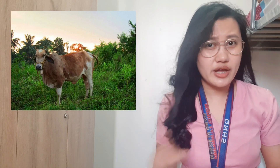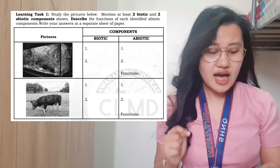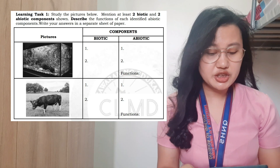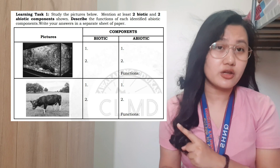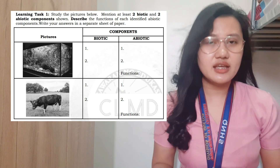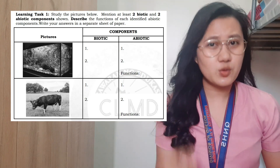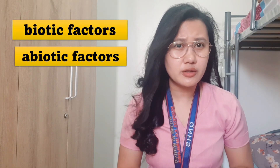Yan ang gagawin nyo sa inyong learning task number one. You have to study these pictures and then mention at least two biotic and two abiotic components shown. And then you're going to describe the functions of each identified abiotic component. Pwede nyo isulat yan sa isang kapirasong papel. Since na-discuss natin ang pagkakaiba ng biotic and abiotic component or abiotic factor, so madali nyo nang ma-identify yan.